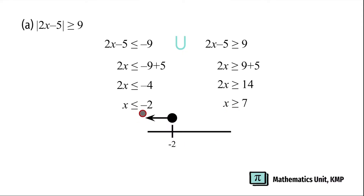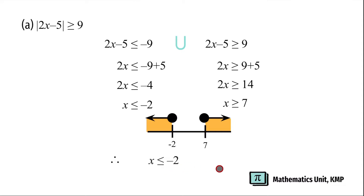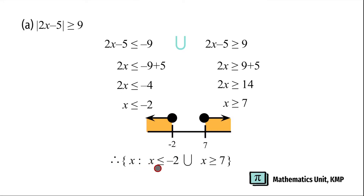For x less than or equal to negative 2, draw a closed circle and a left-side arrow. For x greater than or equal to 7, draw a closed circle and a right-side arrow. Performing the union operation, both sides are the solution. Therefore, the solution set is: x such that x is less than or equal to negative 2 union with x is greater than or equal to 7.